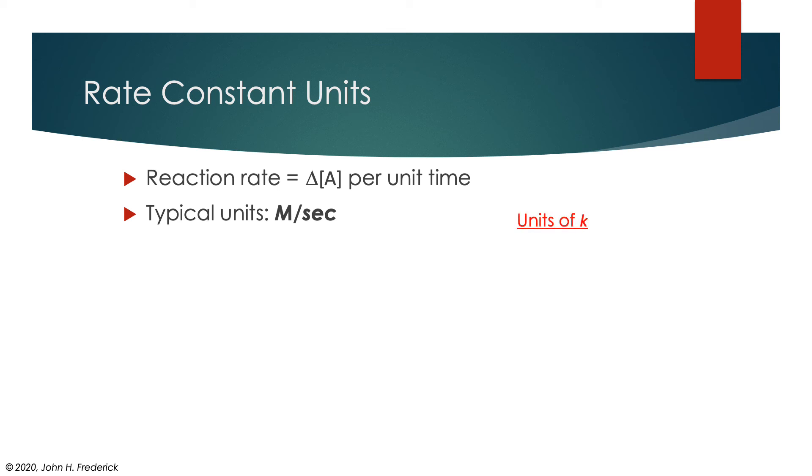So let's look at what the units of the constant k that appeared in the rate equation, the rate law, would vary depending on the order of the rate law. So for a zeroth order rate law, we would have this rate equation, that minus the change in a concentration with time is equal to k times A raised to the zero power. But anything raised to the zero power is 1, so that's just equal to k. So that means that k is going to have the same units as rate, which we've decided is molarity per second.